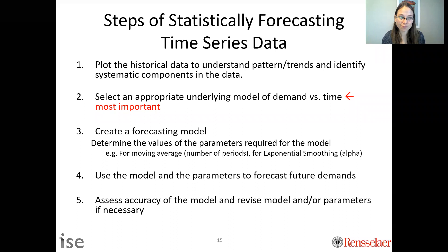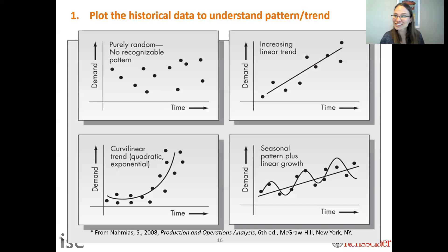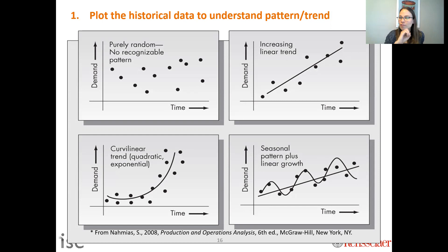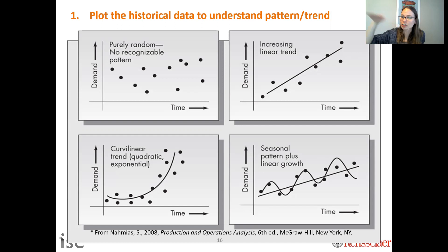So the first step is plotting historical data to understand trends and patterns. Examples include: just level with no recognizable pattern, an upward trend where points aren't perfectly on a line but clearly trend upward, and more complex patterns. Any dataset with more than one point has a level, because you can always take an average. The second example would have both trend and level.